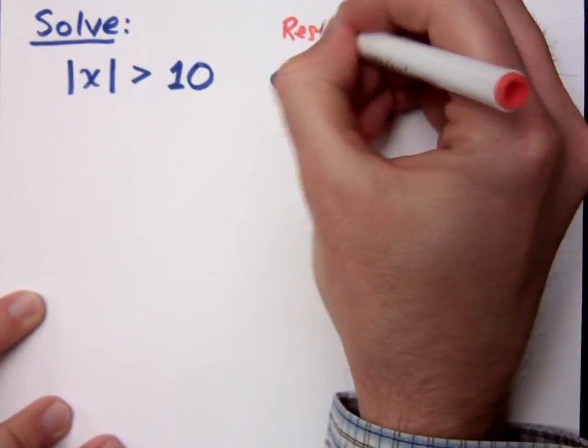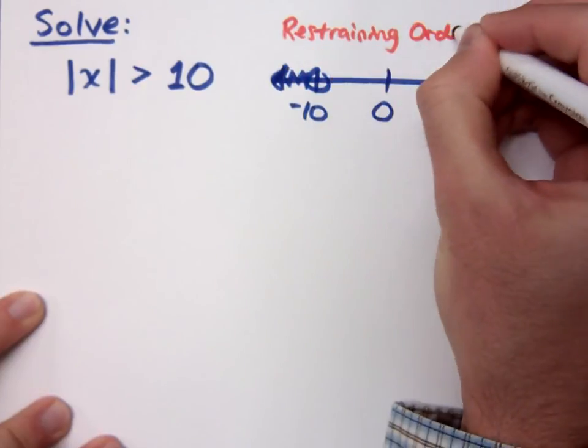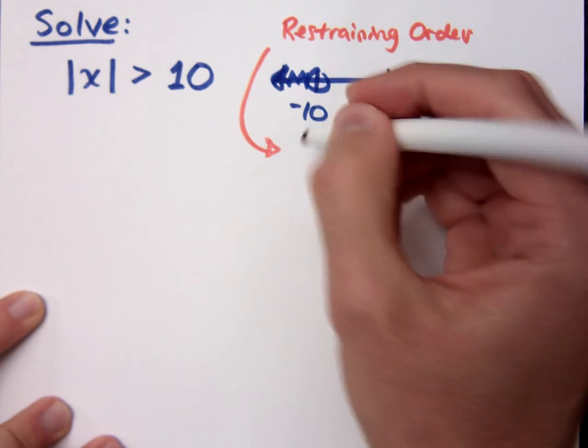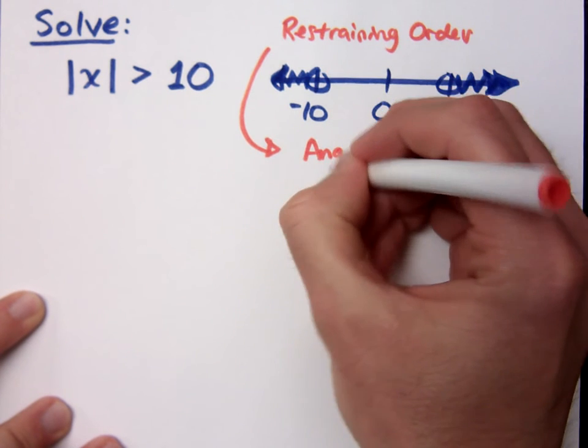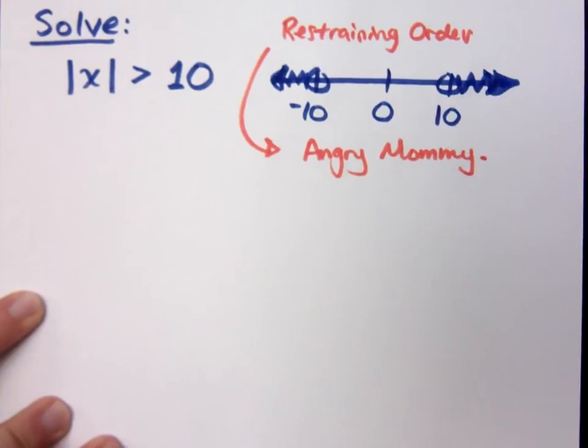And this is what I call the restraining order. The restraining order, it's also, maybe we call it a new name. This is the angry mommy.